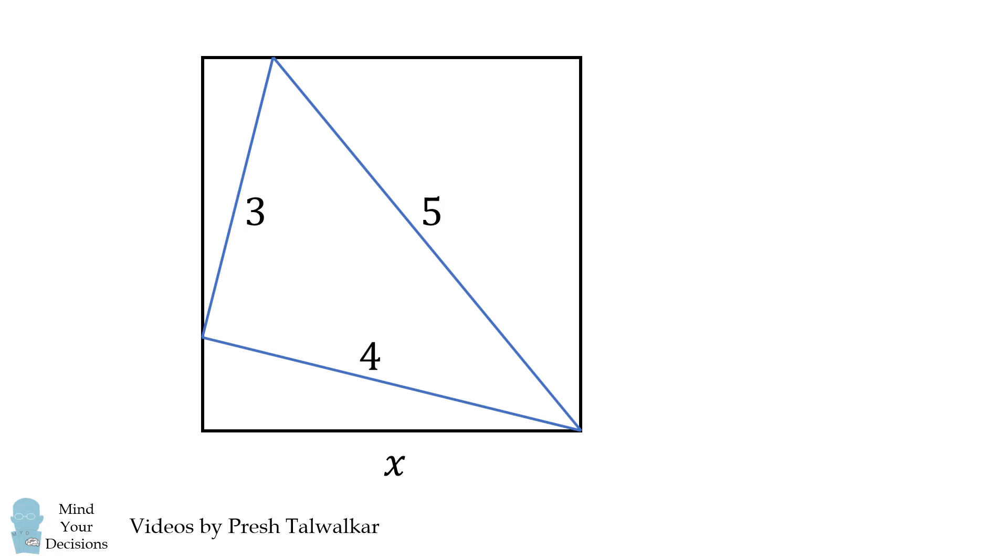So, how can we solve for x, the length of the square side? First, notice that the triangle has lengths of 3, 4, and 5, and that means it's a right triangle. The angle between the sides of 3 and 4 will be a right angle and measures 90 degrees.